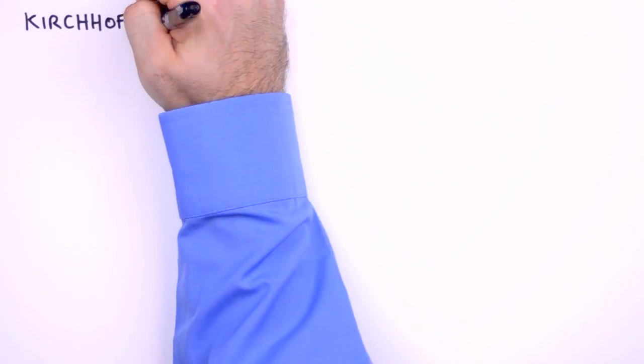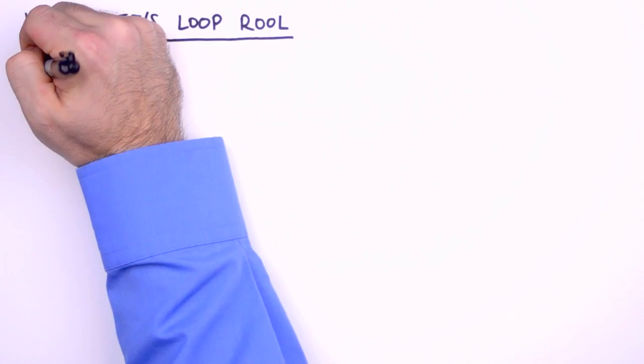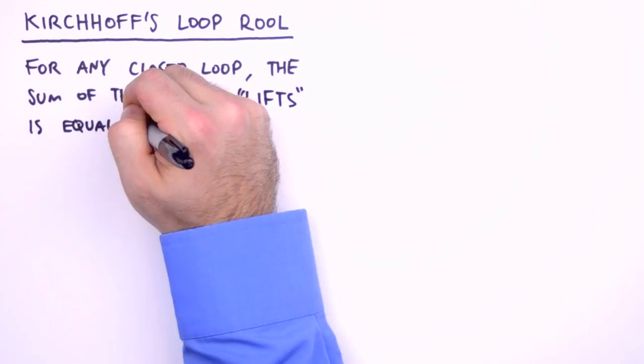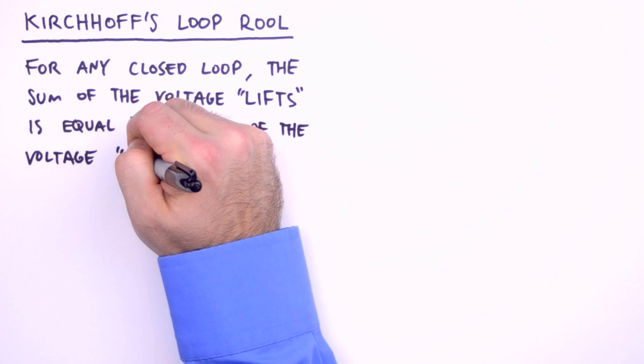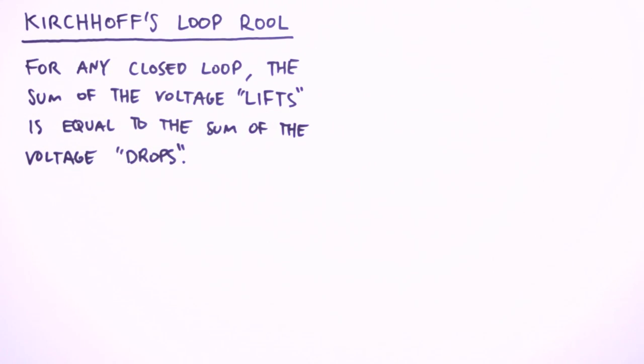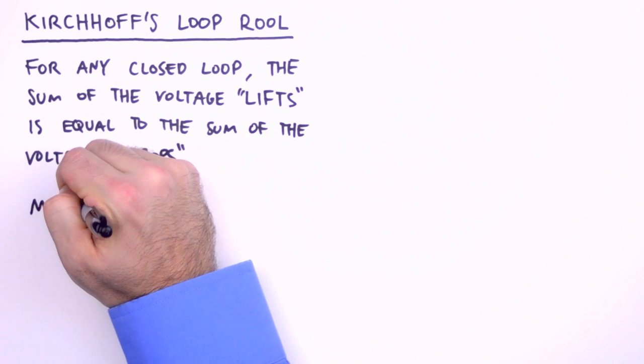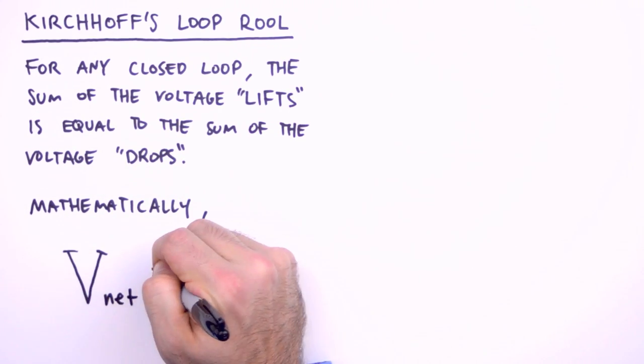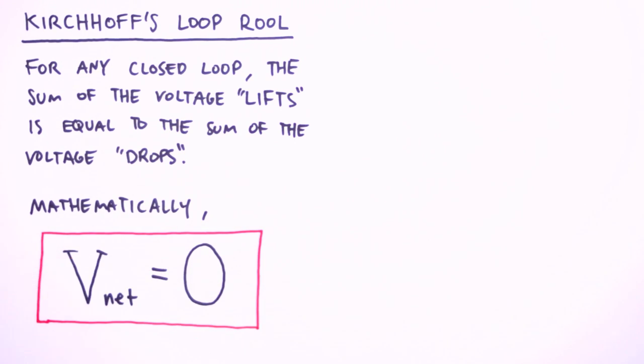Now let's examine Kirchhoff's other rule, the loop rule. The loop rule states that, for any closed loop, the sum of the voltage lifts is equal to the sum of the voltage drops. We'll define a closed loop as any continuous path in the circuit which ends where it started. The loop rule stated mathematically is, the net voltage for a closed loop equals zero.